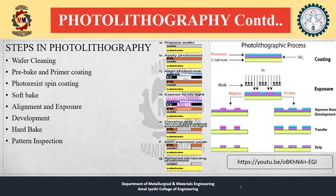The next step is exposure and developing. After pre-baking, the photoresist is exposed to a pattern of intense light. Exposure to light forces a chemical change that allows some of the photoresist to be removed by a special solution called a developer, by analogy with a photographic developer. In positive photoresist — the most common type — the resist becomes soluble in the developer when exposed. With negative photoresist, the unexposed regions are soluble in the developer.